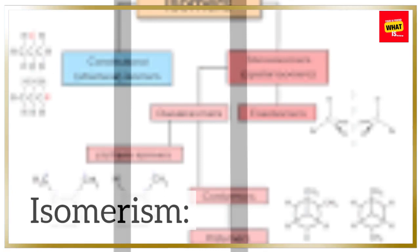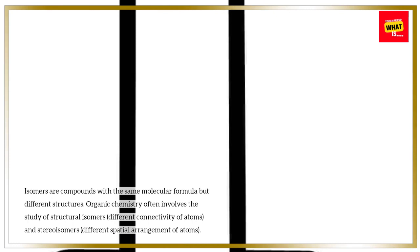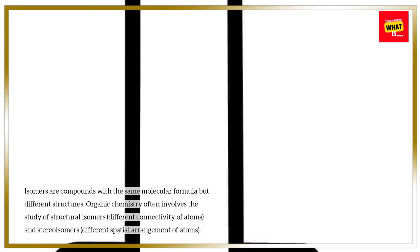Isomerism. Isomers are compounds with the same molecular formula but different structures. Organic chemistry often involves the study of structural isomers — different connectivity of atoms — and stereoisomers — different spatial arrangement of atoms.